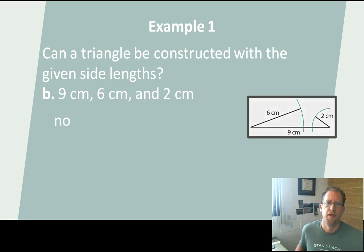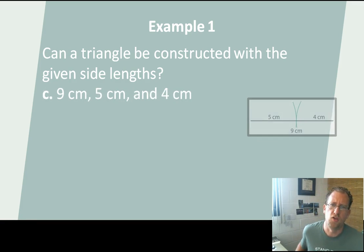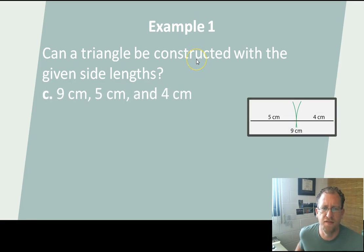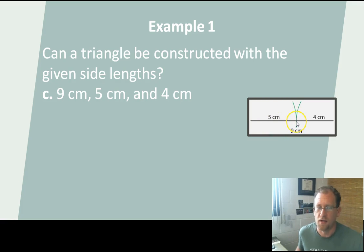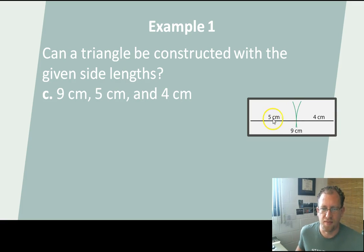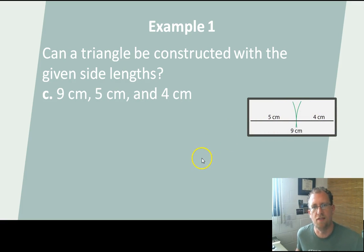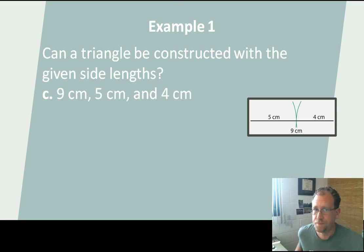Let's look at one more. Can you make a triangle that has side lengths of 9, 5, and 4? Well, no, because when you draw a line of 9 and then you arc over at 4 and you arc over at 5, they actually run into each other right here. So you'd wind up with a straight line with a segment that's 5 and a segment that's 4 and a larger segment containing the two of them that's 9. That's not a triangle. It's a line, but it's not a triangle.